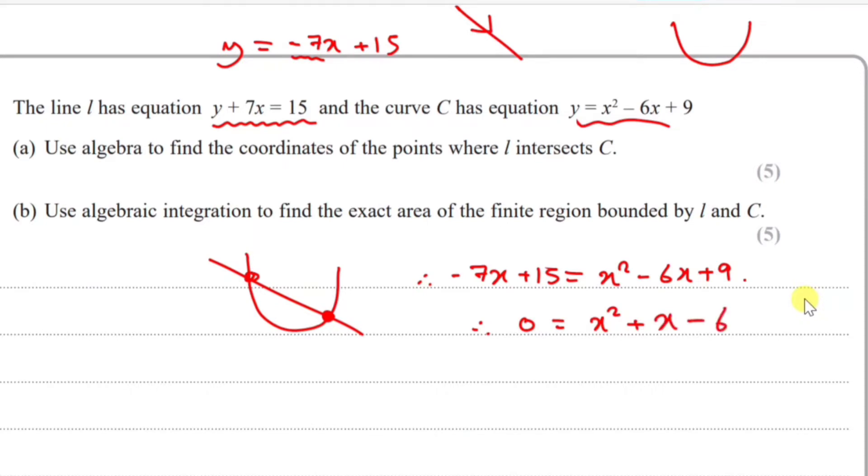I think this is factorizable. Let's have a look. You need two numbers to multiply to make 6 - that's 3 and 2 - and they have a difference of 1. So factorizing this quadratic, you should get (x + 3)(x - 2) = 0.